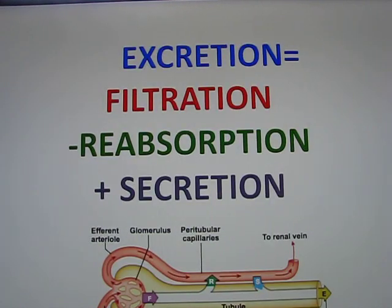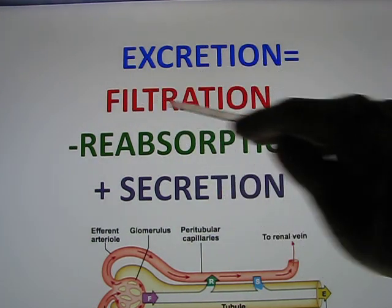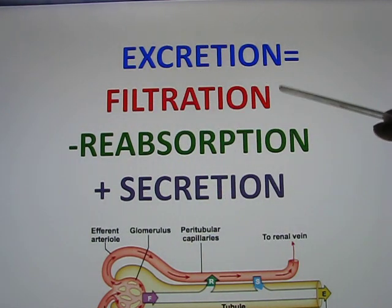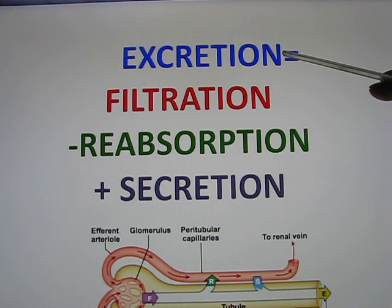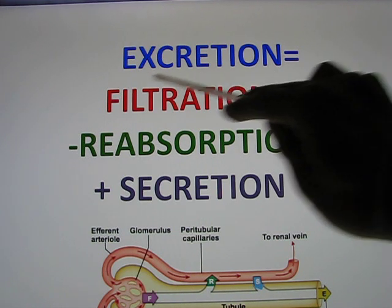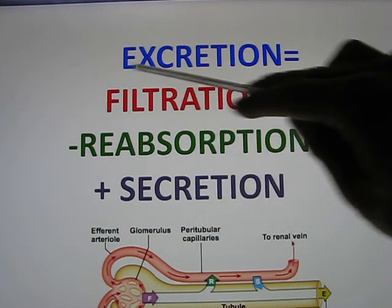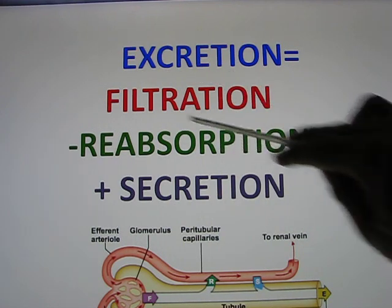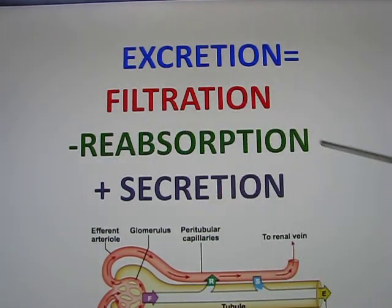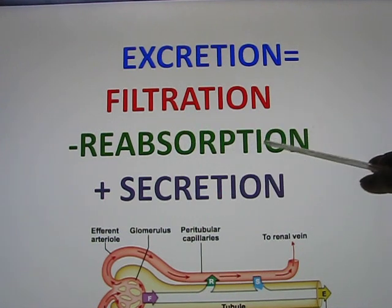How much you excrete depends on how much has been filtered in. If you filter in nothing, you get nothing — like red blood cells. The excretion rate of red blood cells is supposed to be zero, because no red blood cells can be filtered in. If they can be filtered in, you have to subtract out how much has been taken back — reabsorption — like glucose.